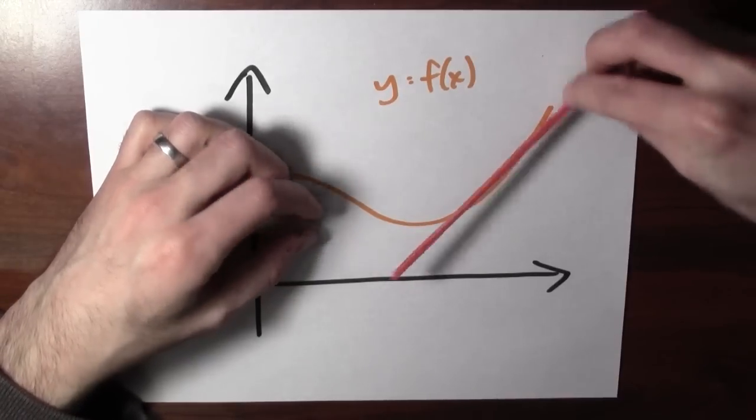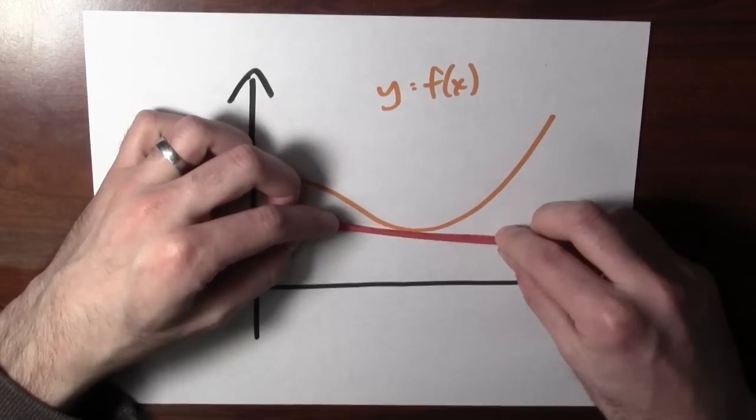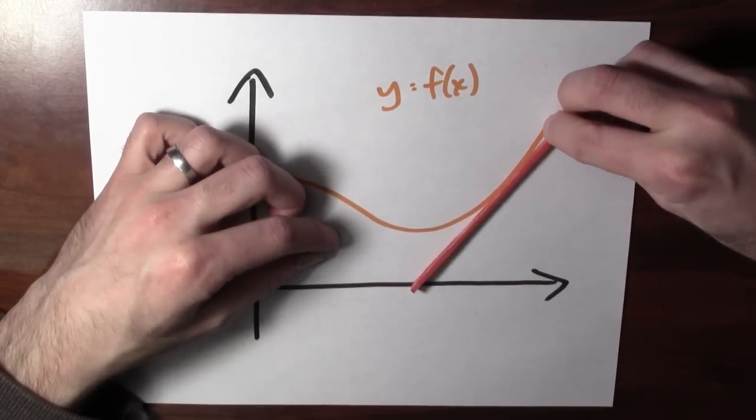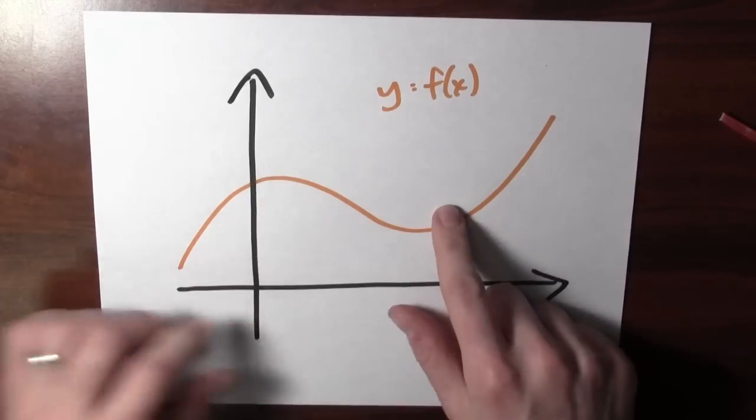And that's exactly what's happening. The slope is negative here, and as I move this tangent line over, the slope of that tangent line is increasing. The second derivative is positive here.